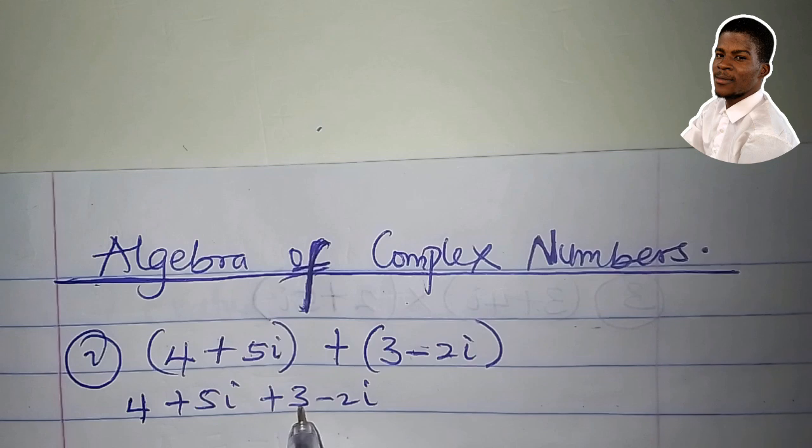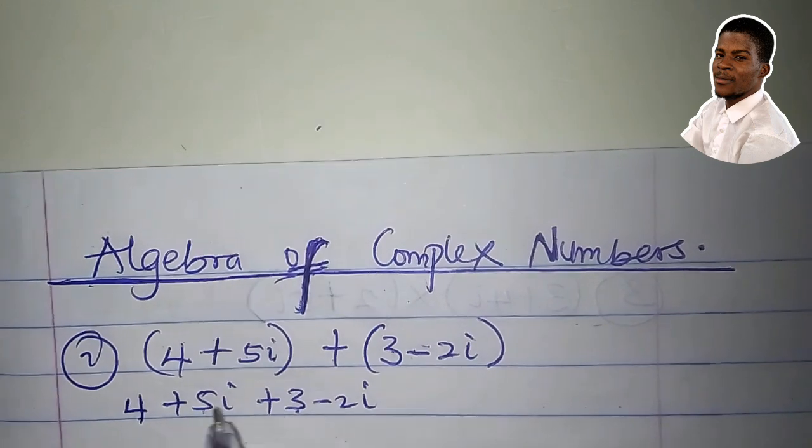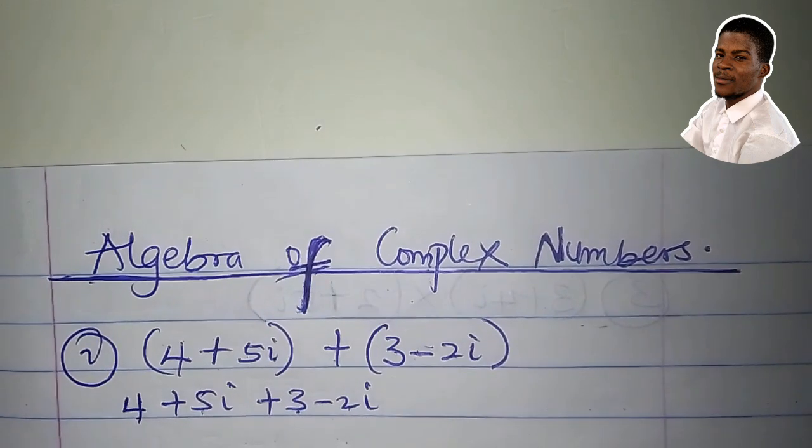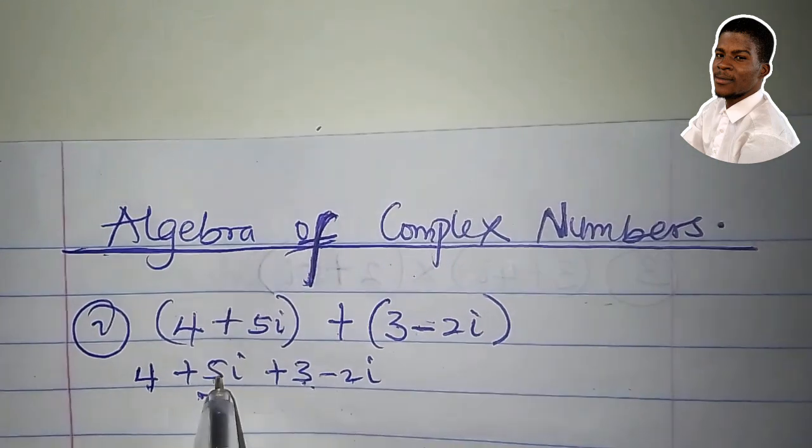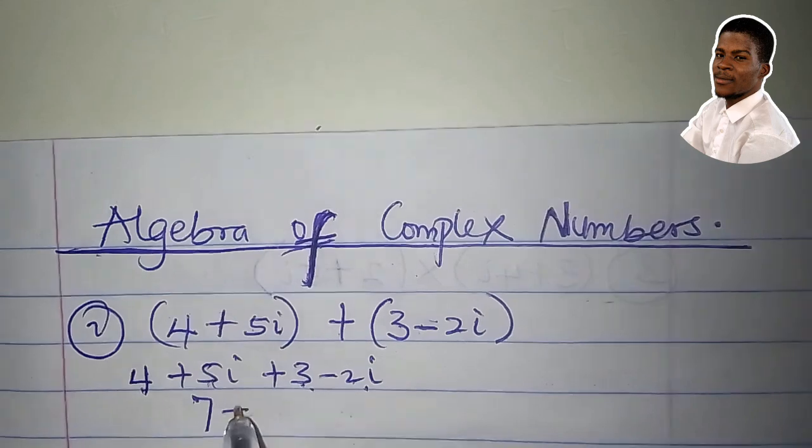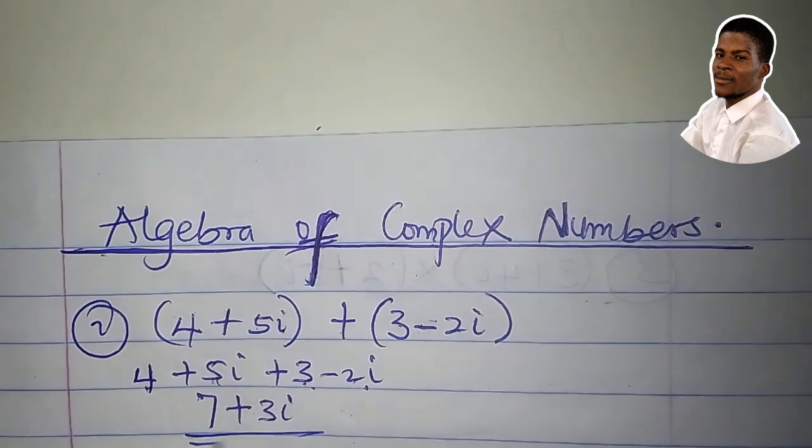4 plus 3, 5i minus 2i. So 4 plus 3 is 7, 5i minus 2i is 3i. This is the result.